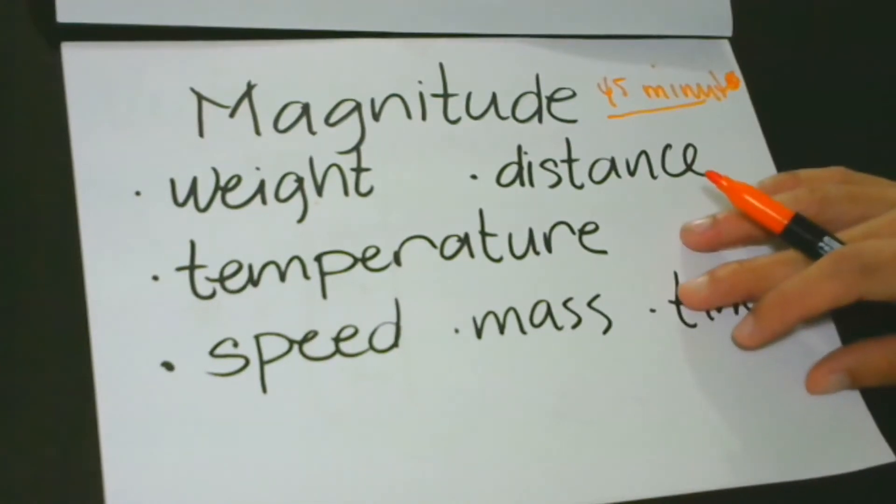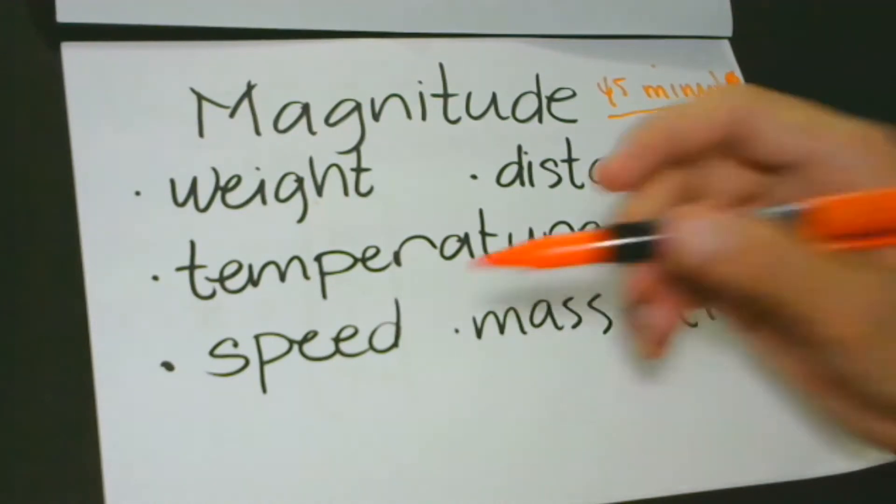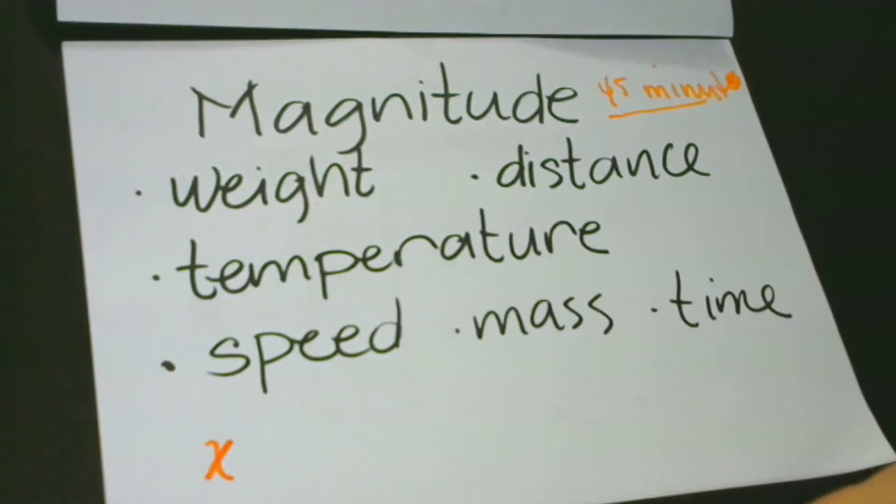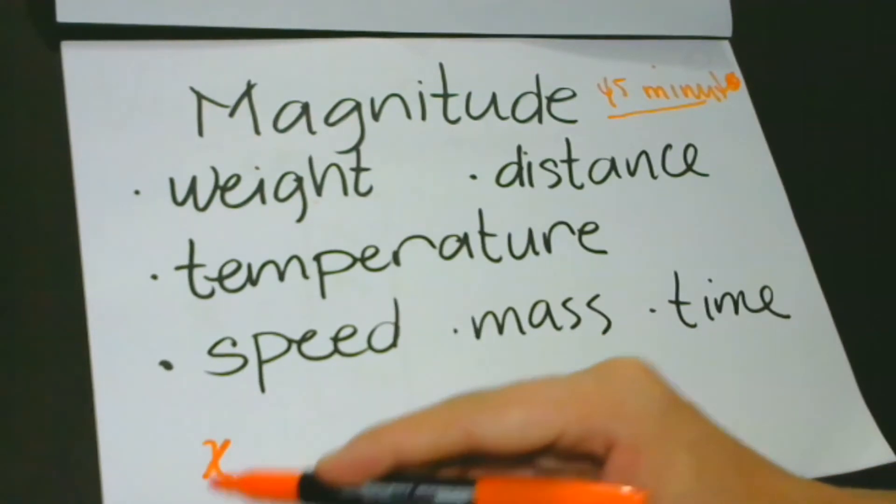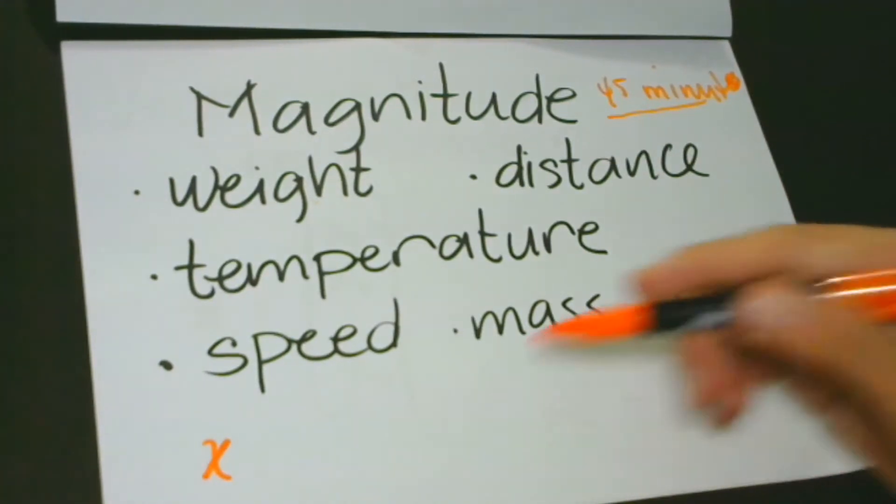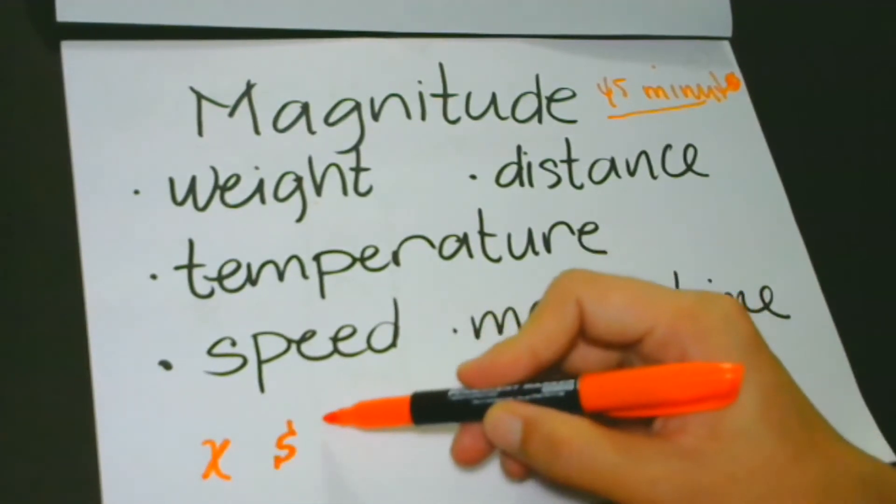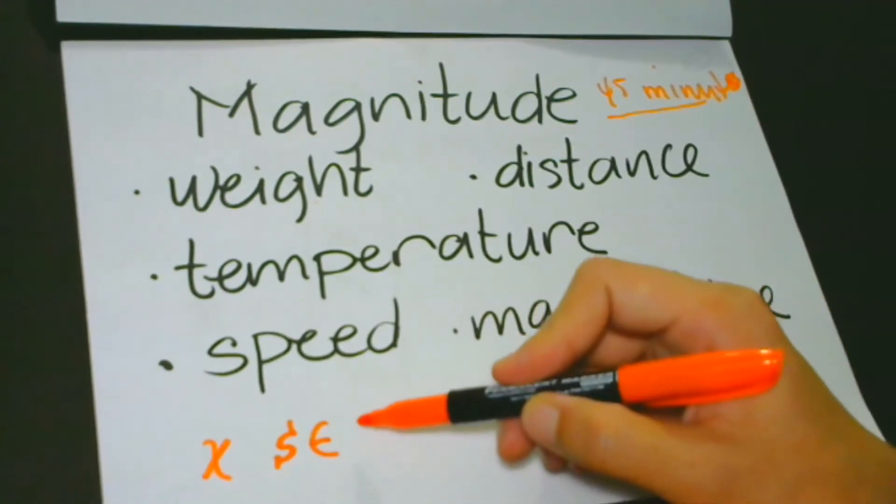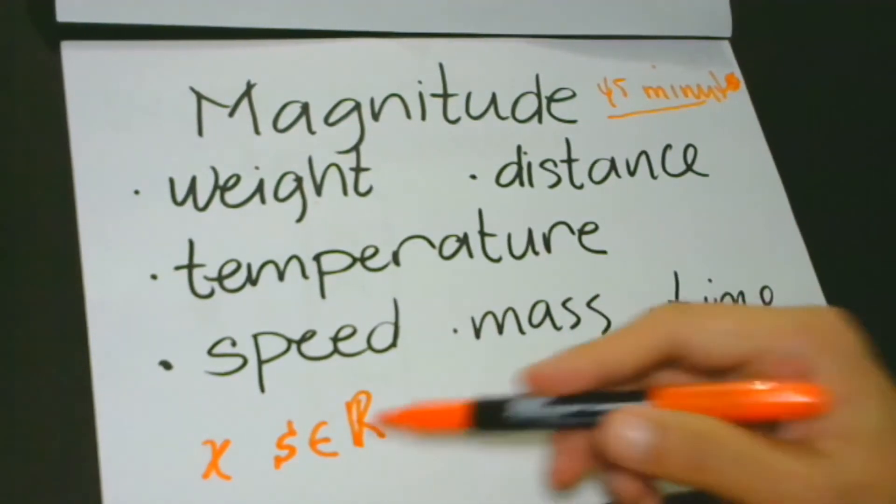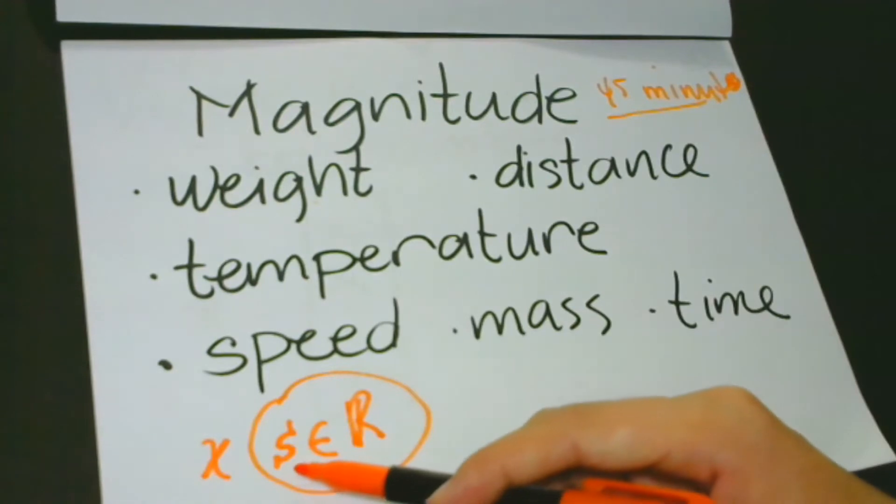We write scalars in lowercase and in italics. It must be in lowercase and it must be in italics. For example, we have the letter X, small or lowercase and then it must be in italics. This is why when you say scalar S, this is in italics. Then, the symbol means element, and this symbol means R or the real number.